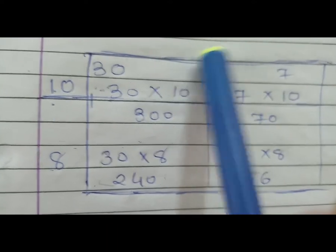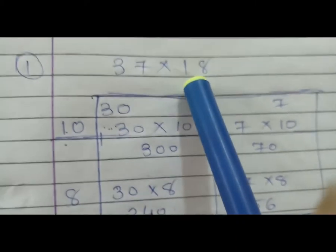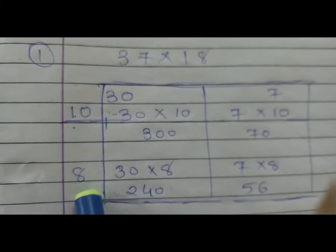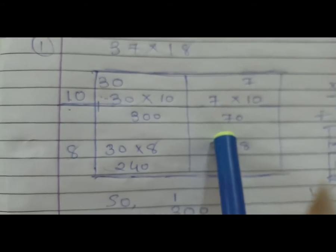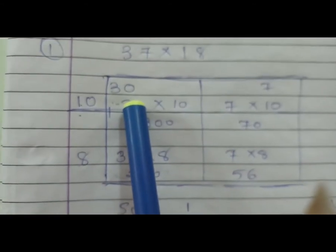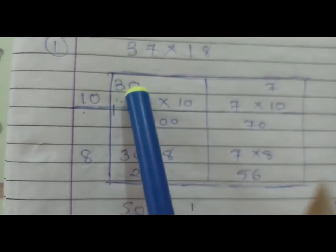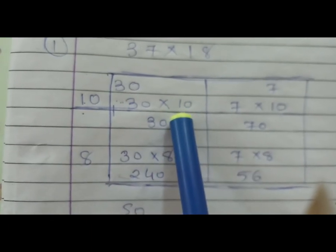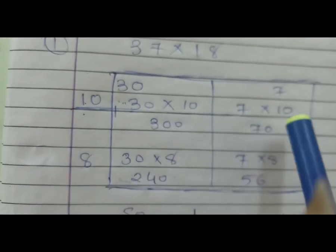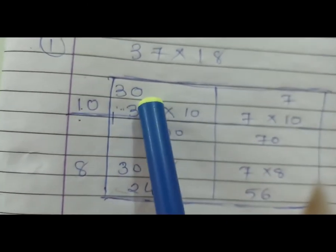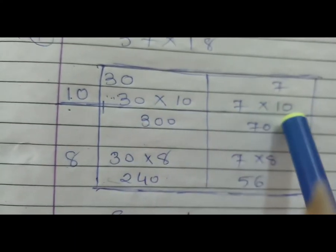Okay. Now 18 की बारी. तो यह जो 18 है, वो हम लिखेंगे standing line में. इसके भी हम पार्ट करेंगे. 18 के पार्ट आएंगे 10 plus 8. Means यहाँ पे 10 लिखना है और यहाँ पे 8 लिखना है. इस तरह से यह सम हम पूरा कर सकते हैं. तो सबसे पहले यहाँ पे जो हमने 30 लिखा, इसका multiply हम 10 से करेंगे. तो यहाँ से 30 यहाँ लिखेंगे और 10 को यहाँ multiply लिखेंगे.